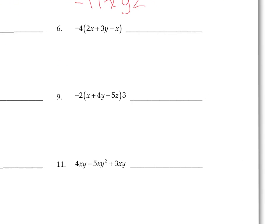Number 6 is the same concept, just with more terms in the parentheses. You can combine like terms first if you want — I see that 2X and negative 1X are like terms. I'm going to combine them first, leaving the negative 4 alone. 2 minus 1 is 1, so I have 1X plus 3Y. Then I use distributive property: negative 4 times X, and negative 4 times 3Y.